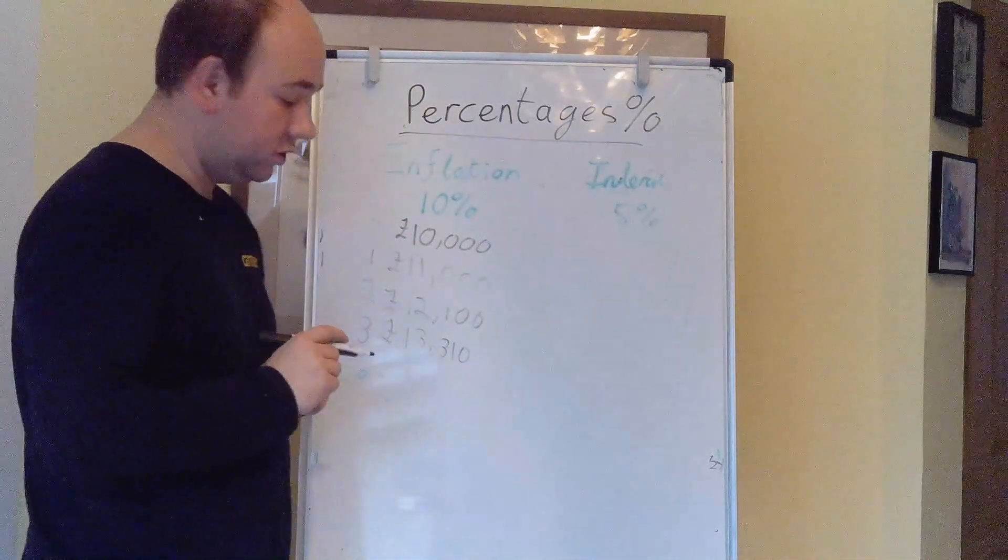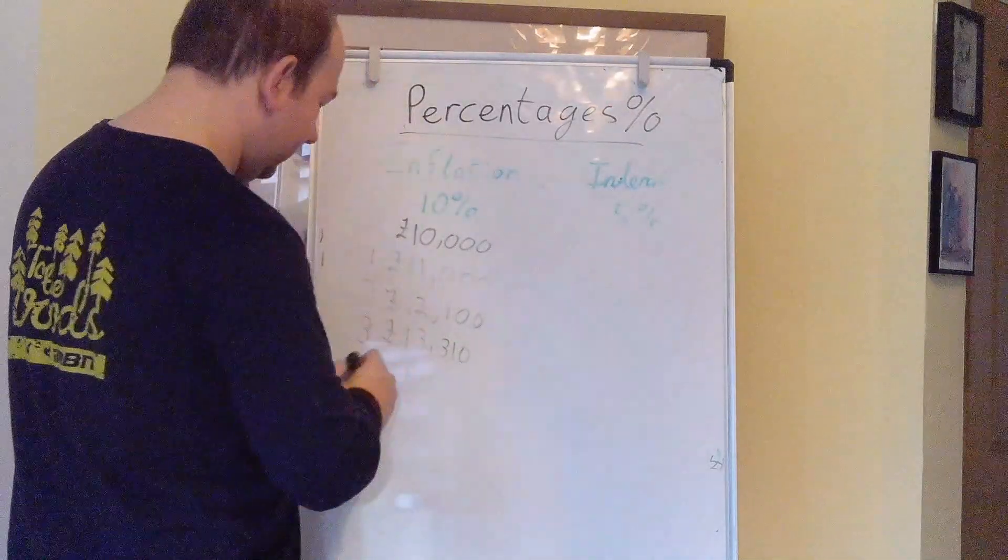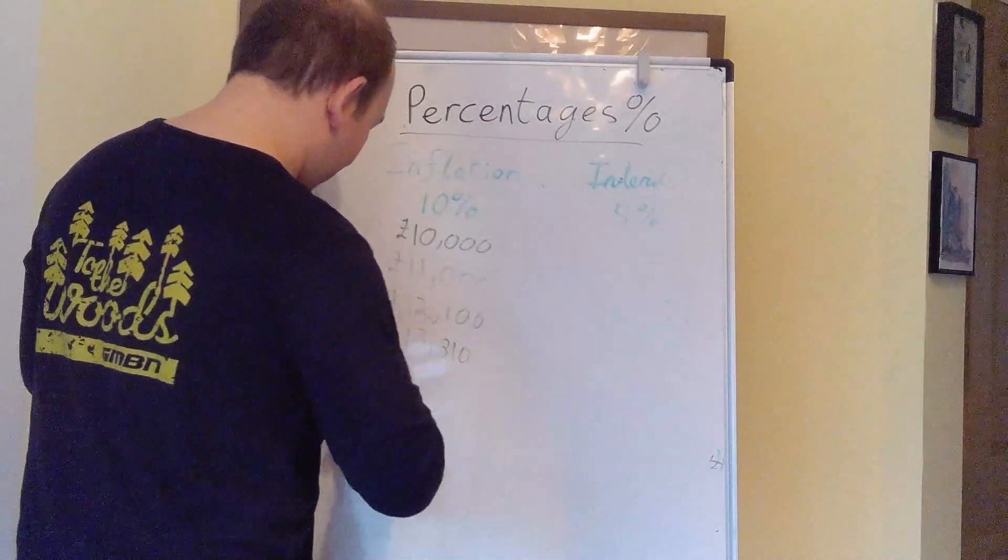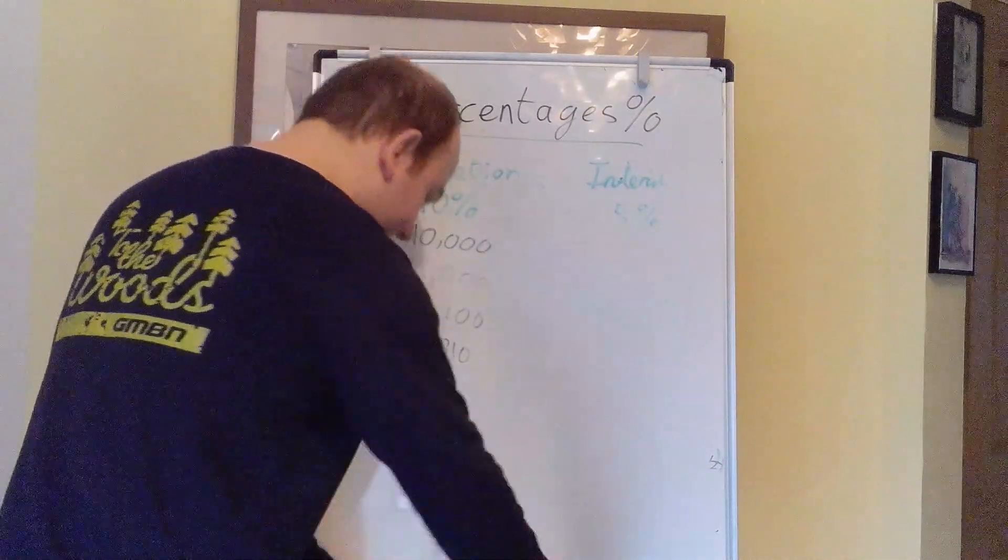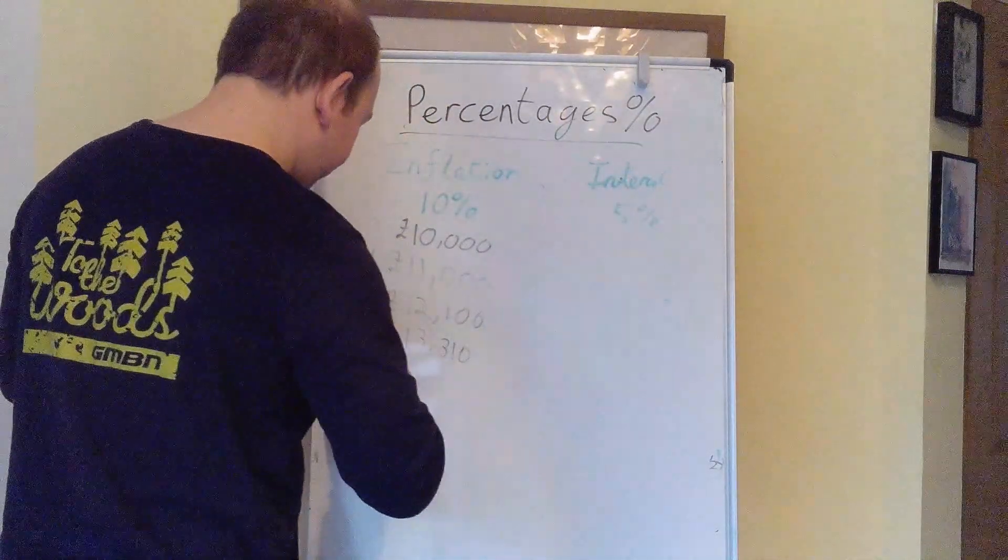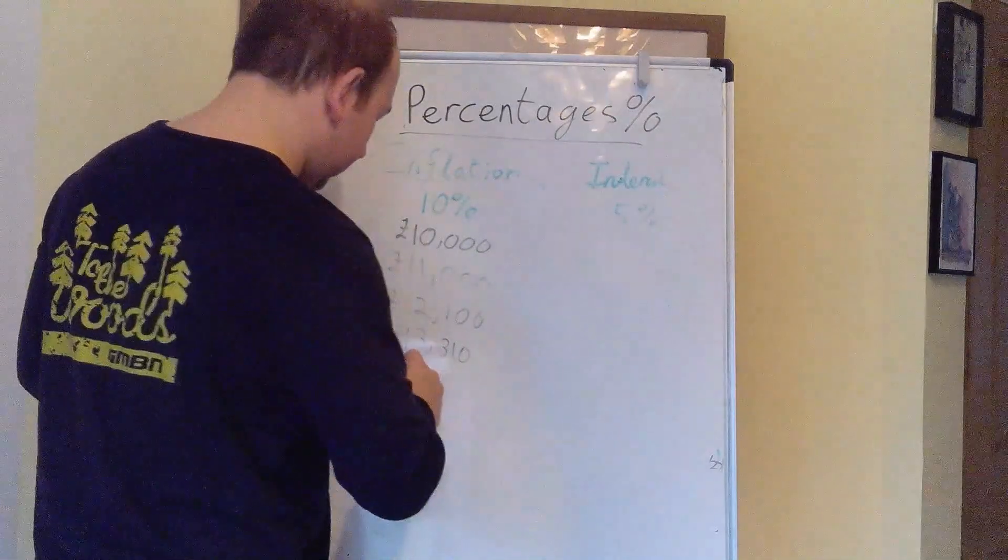So there is a formula for doing this, which is the quantity, or your new value, which we'll call A. So we've got A is equal to the principal sum, which is called P.